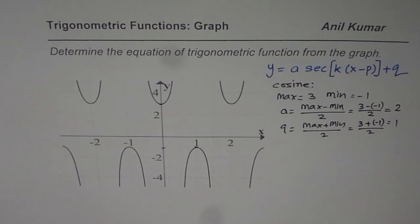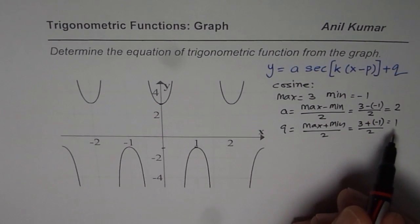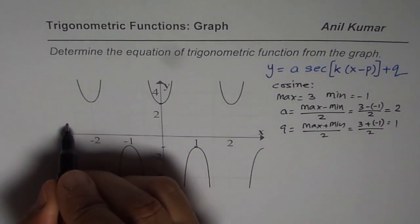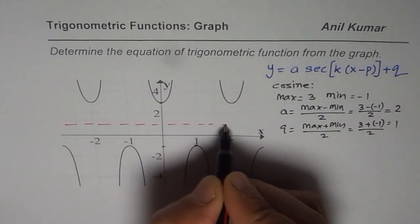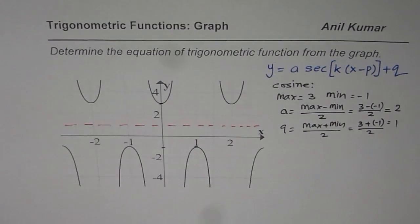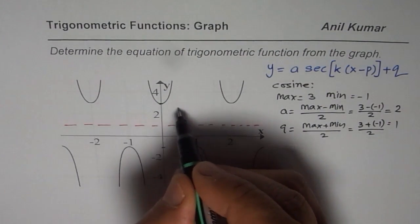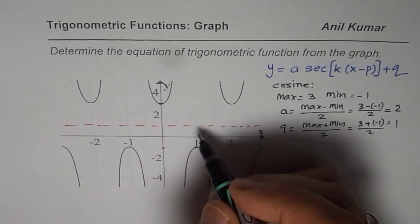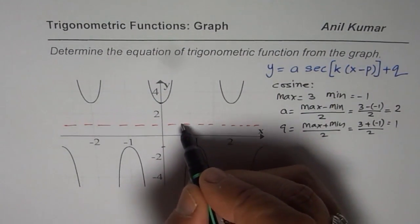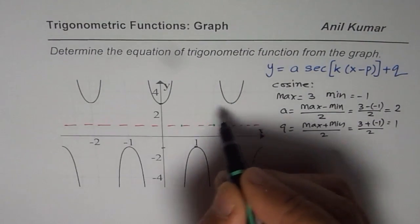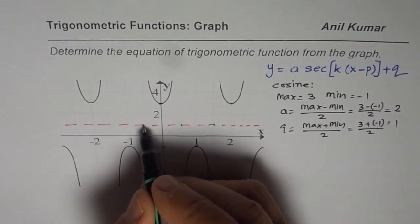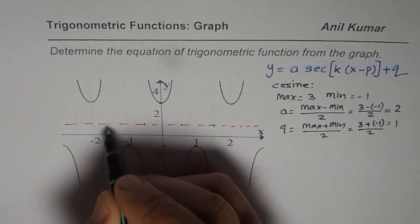So with these two values we can actually draw the axis at y equals 1. So we can draw the axis here. Now we know the maximum and minimum values. So these are the maximum values. These are the minimum values. So what I will do is first I will plot some points so that I get some points to connect with and then it will be easier for us to draw.